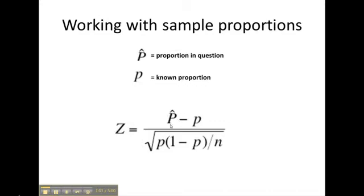The P with a hat, it's called P hat, is the proportion in question. The other P, which shows up three times, is your known proportion, and of course, N is always your sample size.